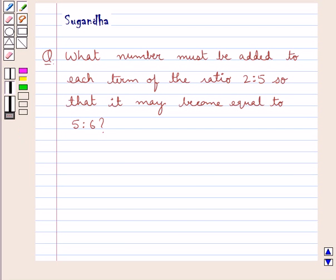Hello and welcome to the session. In this session we discuss the following question which says: what number must be added to each term of the ratio 2 is to 5 so that it may become equal to 5 is to 6?